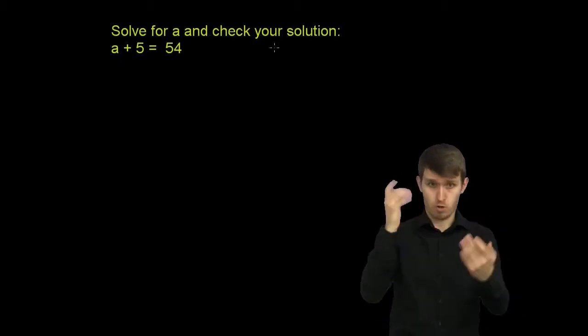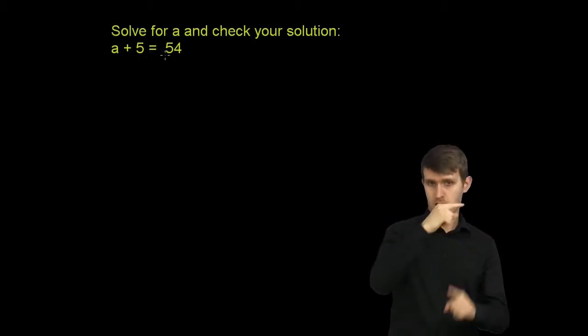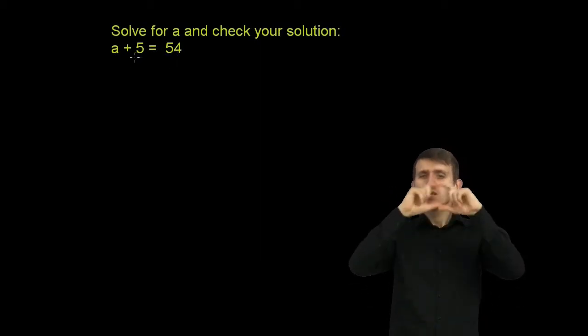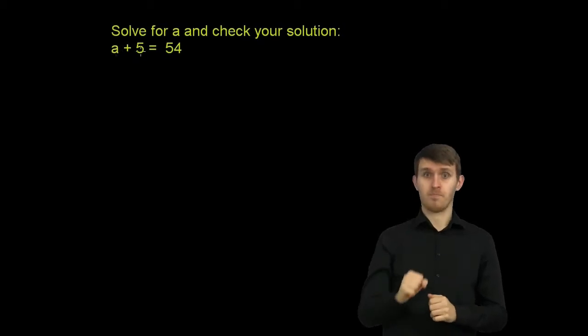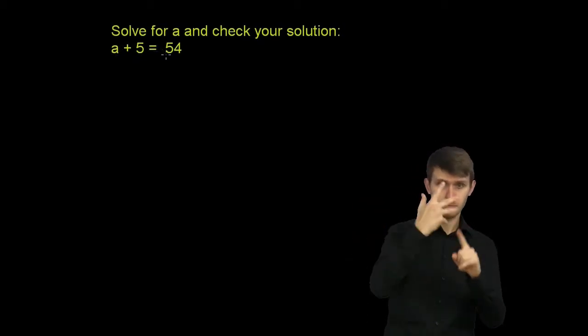Solve for a and check your solution. We have a plus 5 is equal to 54. Now all this is saying is that we have some number, some variable a, and if I add 5 to it, I will get 54.